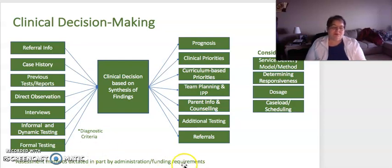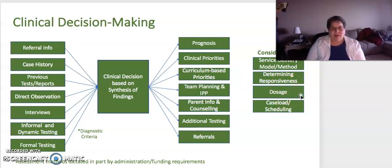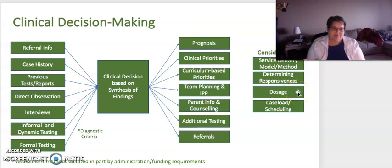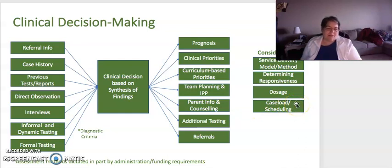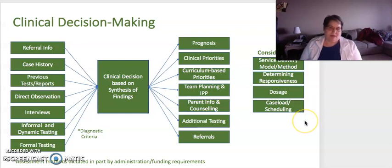Additional considerations would be what service delivery model and method would be ideal based on the student's needs, determining responsiveness to those, and then dosage — how much intervention is required in terms of the level of intensity necessary for that child to benefit. Your caseload management and scheduling routines used by the administration will make a difference in terms of having a broader array of opportunities and different ways to provide intervention moving forward.